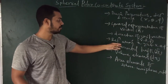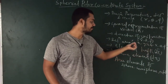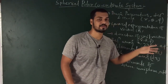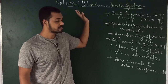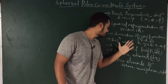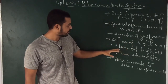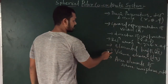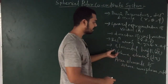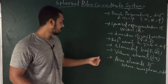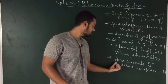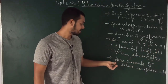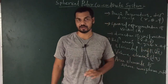Then we will discuss the relation among X, Y, Z — which are the parameters of Cartesian coordinate system — with the R, Theta, Phi, which are the parameters of spherical polar coordinate system. Then we will go for elemental length DL. Later on we will discuss volume element Dtau, which is very important. And then we will see the area elements of a sphere, hemisphere and octant and so on.